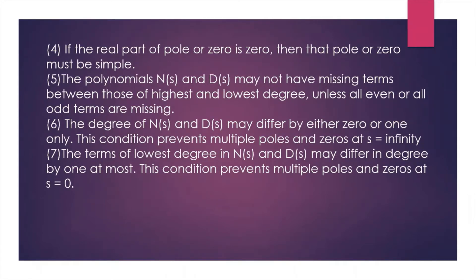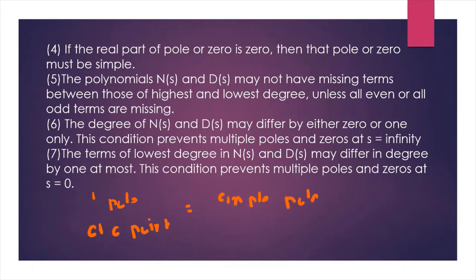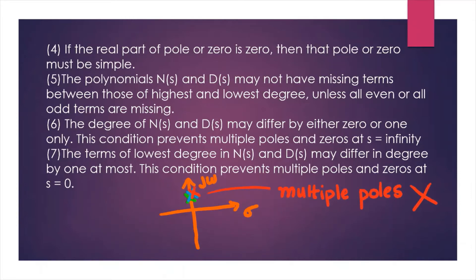The fourth condition: poles or zeros on the jω axis must be simple. That is, we cannot have a repeated pole or zero on the imaginary axis. There should be only one pole at a particular point on the jω axis; multiple poles on the jω axis are not allowed.